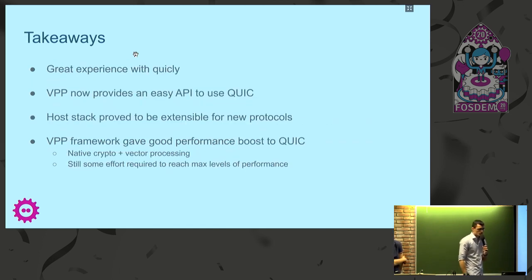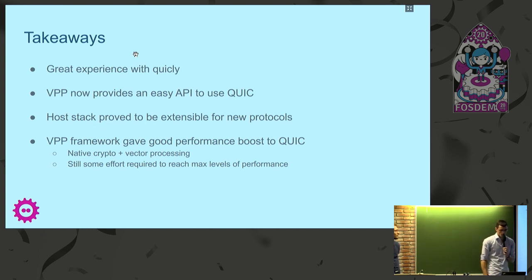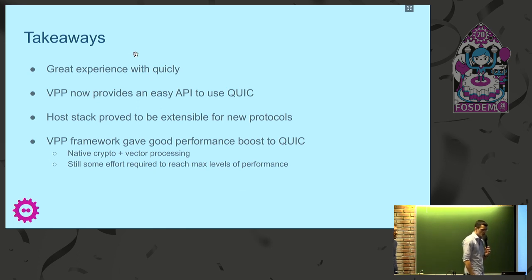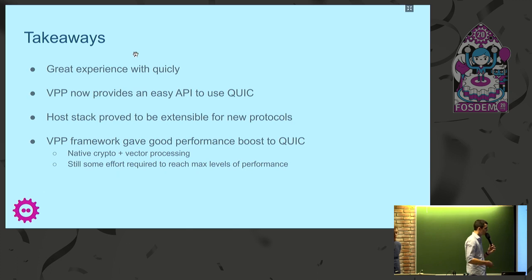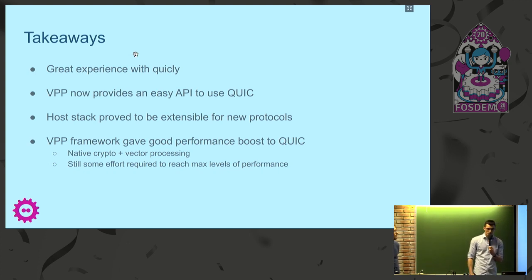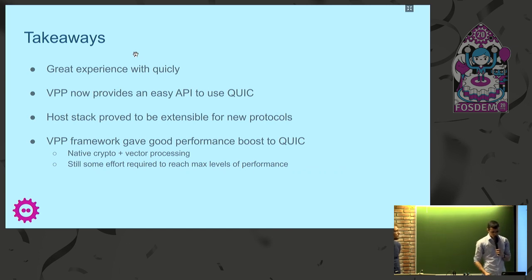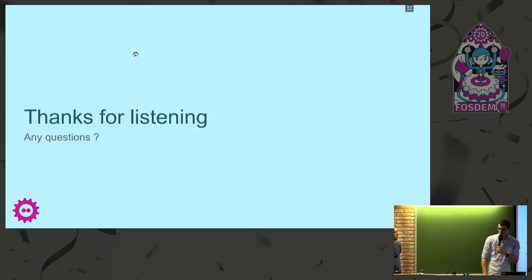For the main takeaways: first, we really want to thank the quicly team — we had a great experience with the library. It proved easy to use, pluggable, and very flexible, so I highly recommend it if you want to play with QUIC. We now have an easy-to-use socket-like API for QUIC in VPP, and the VPP host stack proved extensible enough for new protocols that don't have the same concepts as existing ones. Using the VPP framework allowed us to quite easily get a good performance boost — a 30% performance improvement just by using native crypto and vector processing concepts. There's still a bit more work required to reach maximum performance, and we are a bit slower than TLS for now, but we hope to reach similar levels in the future.